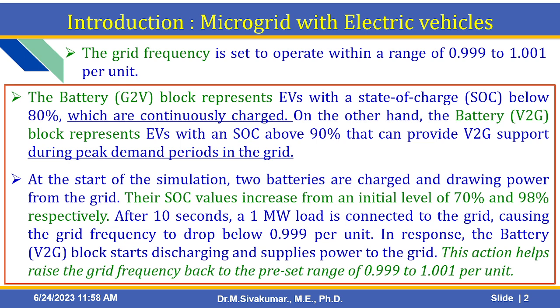In this example, the grid frequency is set to operate within the range of 0.999 to 1.001 per unit. There are two blocks: the battery G2V block — the grid to vehicle block — represents electric vehicles with a state of charge below 80% which are continuously charged. On the other hand, the battery V2G block — the vehicle to grid block — represents EVs with a state of charge above 90% that can provide vehicle to grid support during peak demand periods in the grid.